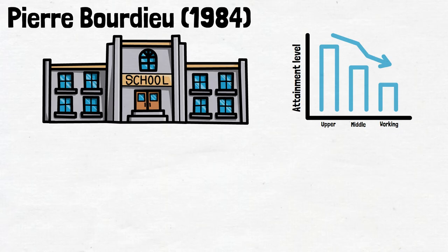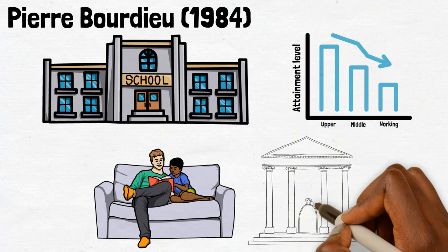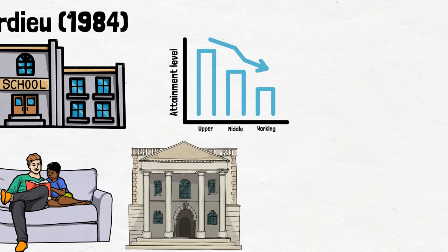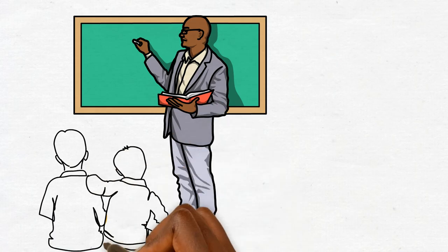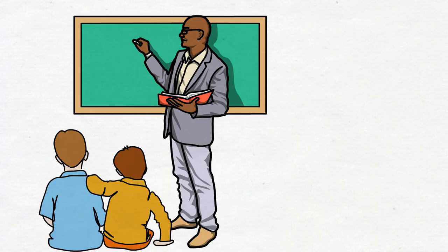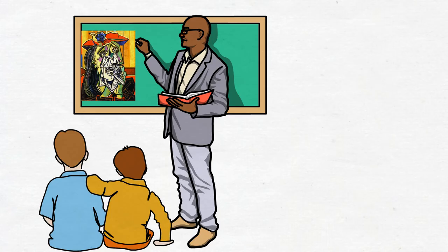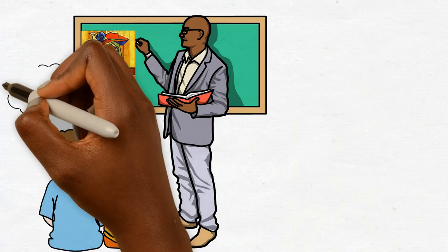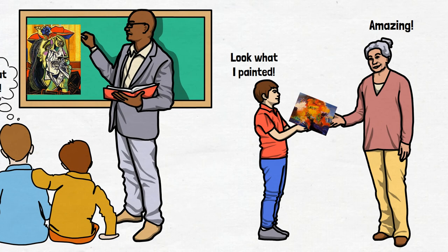Bourdieu explained this pattern by arguing that middle-class parents transmit cultural capital to their children through things like reading certain books and newspapers at home, or taking children to art galleries and museums. This means that at school, middle-class children are already familiar with these things and find it easier to engage in advanced learning as a result. For example, if your parents had recently taken you to an exhibition about the Egyptians or Picasso and your class then did a project on that topic, you'd already know something about it, feel more comfortable, engage more easily, and be more likely to produce excellent work and attain excellent grades.